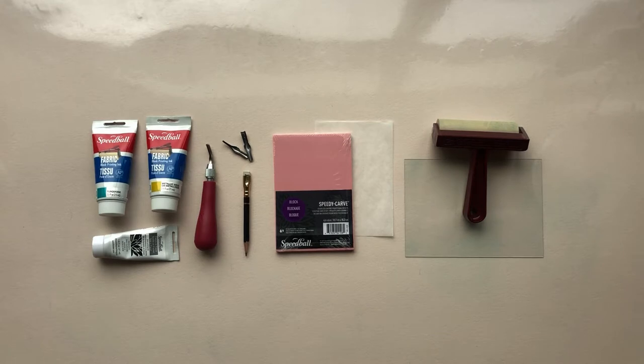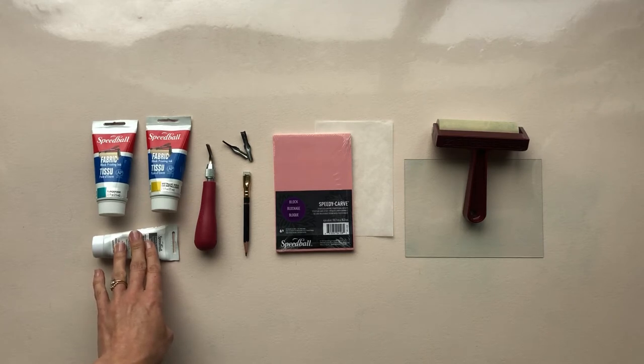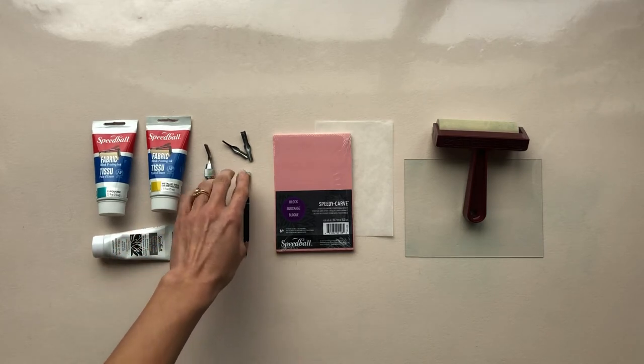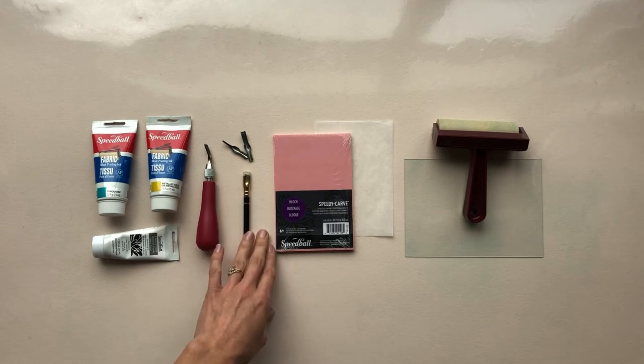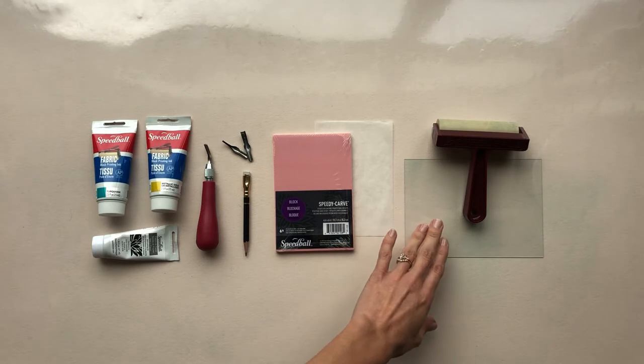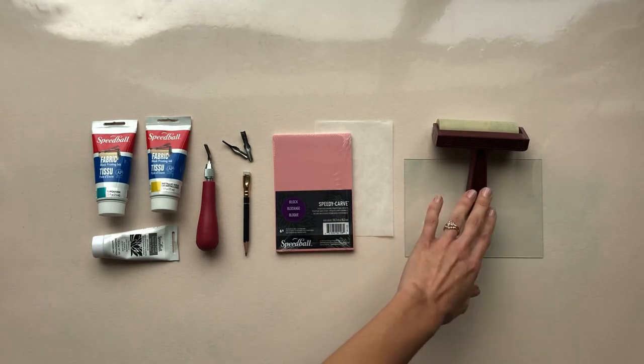Here's what you'll need for this project: fabric printing ink, black ink that comes with your speedy-carve kit, a handle for three blades, a pencil, your speedy-carve block, some tracing paper, a printing plate, and a brayer.